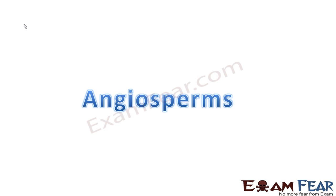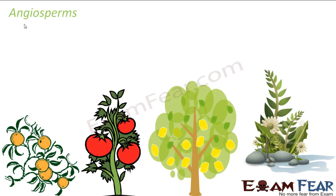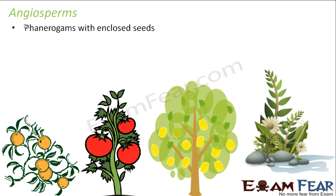Angiosperms include all the flowering plants, and here we have covered seeds. All the colorful plants which we see around us most fall under the category of angiosperms. Some basic characteristics: these are phanerogams with enclosed seeds — the seeds are enclosed inside a structure, and that structure is nothing but the fruit. So they bear fruits. In this picture itself, you can see plants with colorful fruits and flowers — these are the flowering plants.